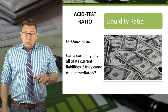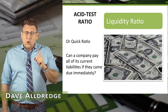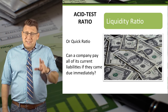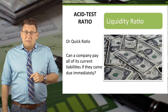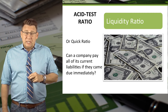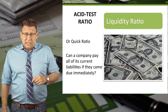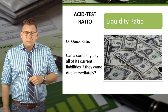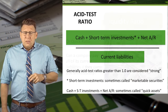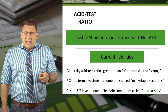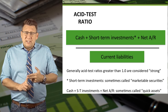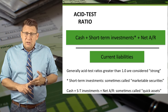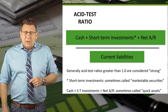The acid test ratio, which is sometimes called the quick ratio, tells us whether an entity could pass the acid test of paying off its current liabilities if they all came due immediately. The acid test ratio is a measure of liquidity. The formula is cash plus short-term investments plus net accounts receivable divided by current liabilities.